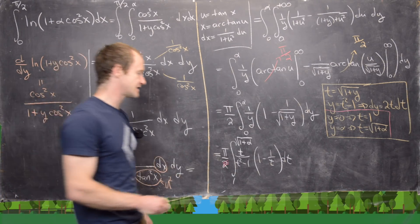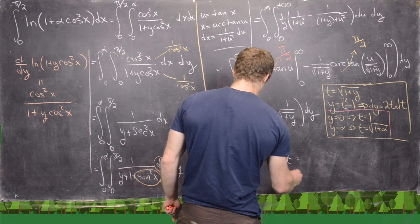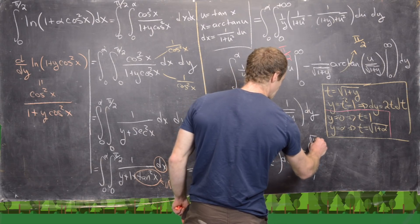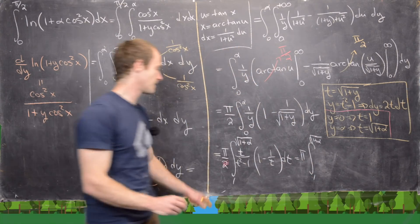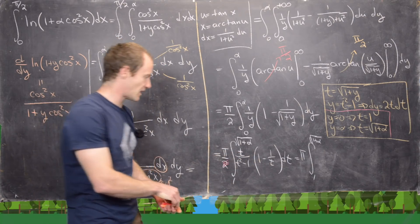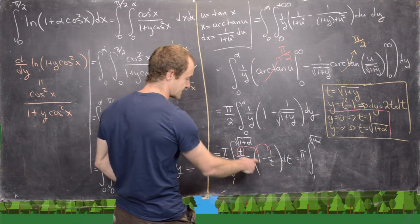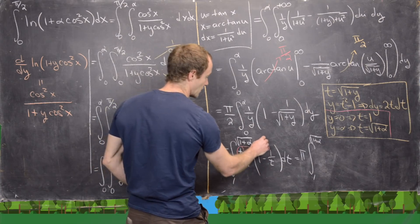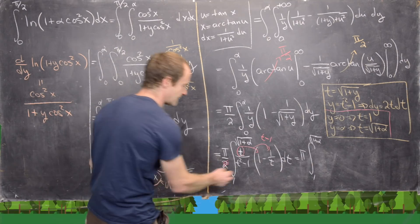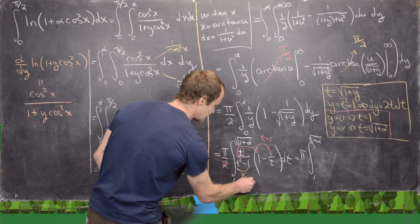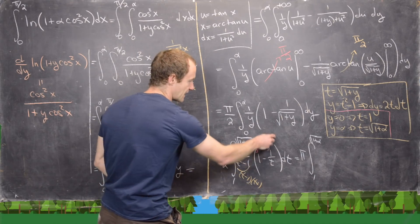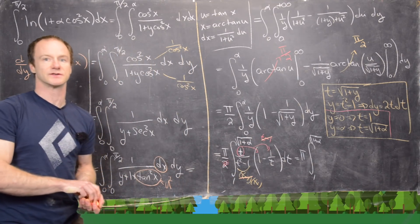Multiplying through by t gives a factor of (t−1) in the numerator. The denominator factors as (t−1)(t+1), so the (t−1) factors cancel, leaving π times the integral from 1 to √(1+α) of 1/(t+1) dt.